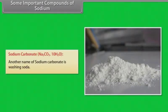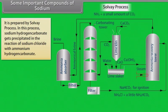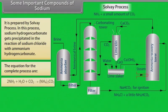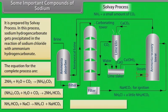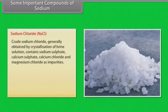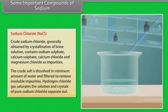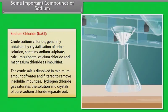Some important compounds of sodium. Sodium carbonate, also known as washing soda, is prepared by the Solvay process. In this process, sodium hydrogen carbonate is precipitated by the reaction of sodium chloride with ammonium hydrogen carbonate. Crude sodium chloride, obtained by crystallization of brine solution, contains sodium sulfate, calcium sulfate, calcium chloride and magnesium chloride as impurities. The crude salt is dissolved in a minimum amount of water and filtered to remove insoluble impurities.